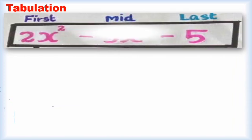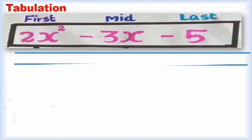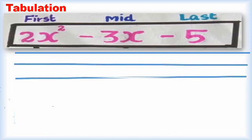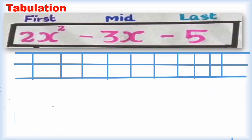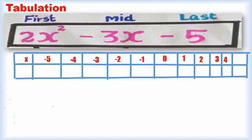Now I want to tabulate x and y values alone, because I am going to plot the points on the graph. For the corresponding x values: minus 5, minus 4, minus 3, minus 2, minus 1, 0, 1, 2, 3, 4, 5.